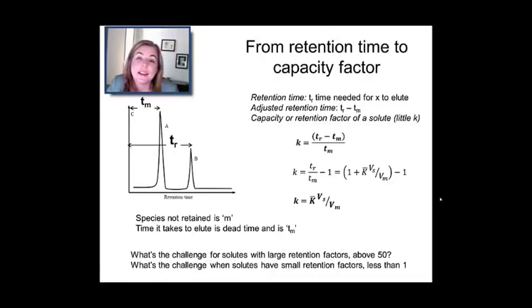One of the challenges, then, you might think about is what if a capacity factor is really big, like 50? Well, that means it took 50 of the mobile phase units to move through the column. And why that's bad is that it could just take a really long time to do the analysis. You might be there for 50 hours, which you might not want to be. And as you're going to see later in resolution, that can actually cost you in terms of resolution. So, you don't want capacity factors to be really big.